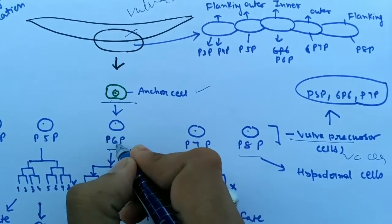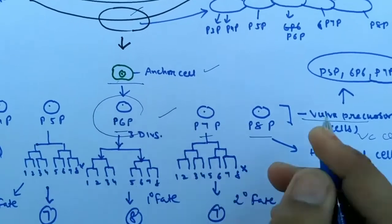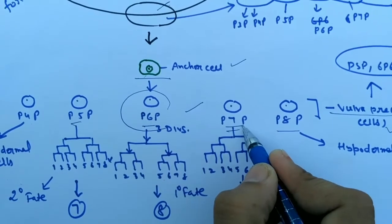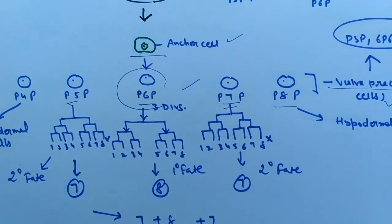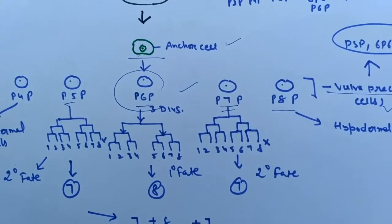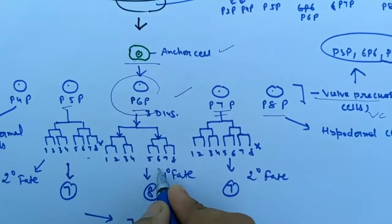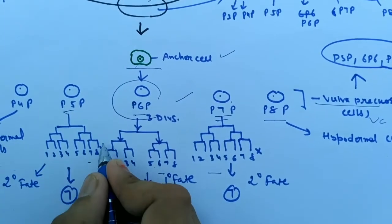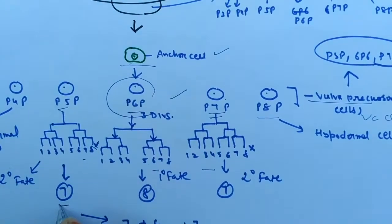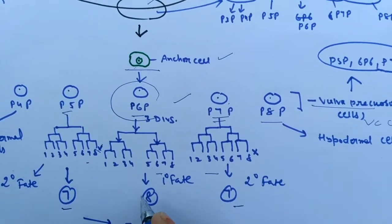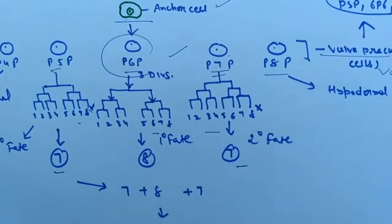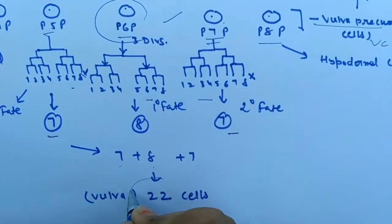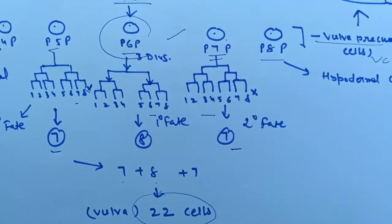The center cell is the P6P cell, and the P5P and P7P cells. They divide by three mitotic divisions and form eight cells. One cell from P5P and P7P is disintegrated. It forms seven cells side by side and eight cells in the inner cells. It forms 7 plus 8 plus 7, that is 22. So the fully formed vulva will have 22 cells.